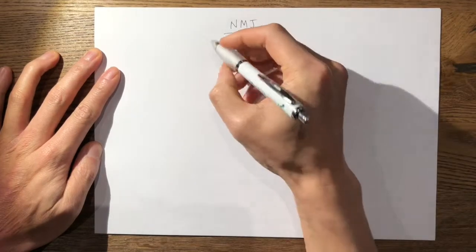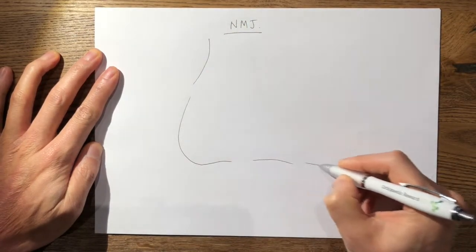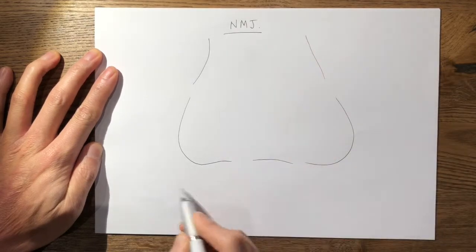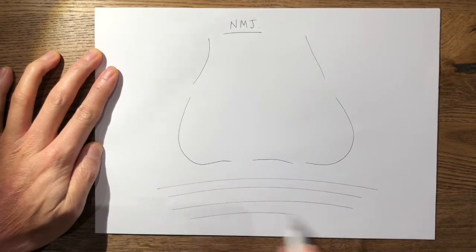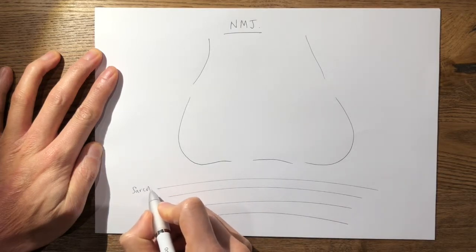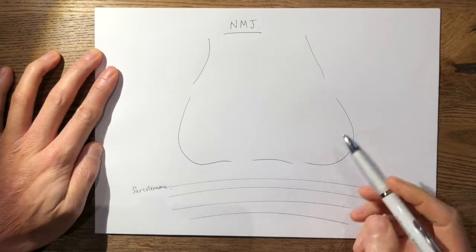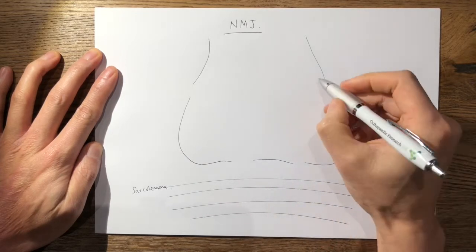So first of all I'll draw the motor end bulb like so and your skeletal muscle which it depolarizes. So this is your sarcolemma of your skeletal muscle and there's a few things that you have to label first of all.